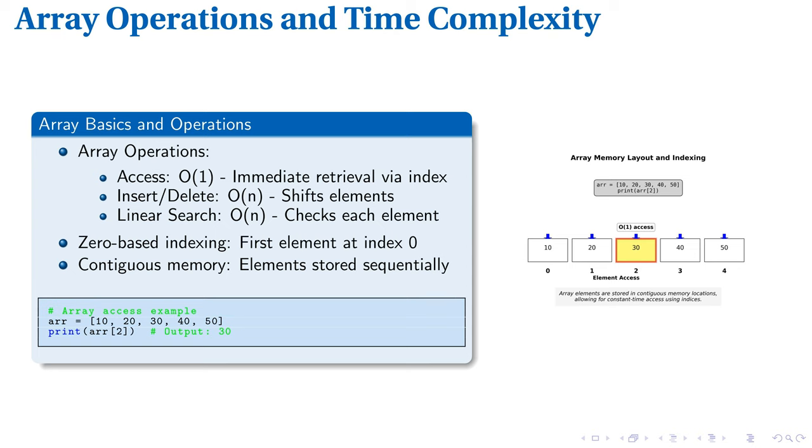We create an array: 10, 20, 30, 40, 50, and access the third element with index 2, which returns 30. This showcases zero-based indexing, where the first element is at index zero.